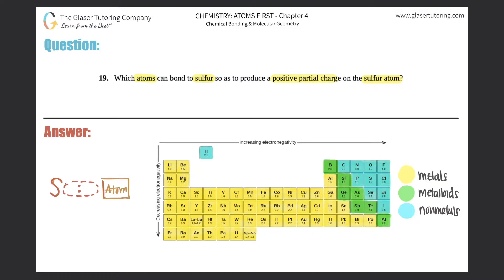The criteria is that we want a positive partial charge on the sulfur atom. In chemistry, a positive partial charge is written as a dipole symbol with a positive sign — δ+. So sulfur has to be δ+, which means whatever the other atom is has to be partial negative, δ−.